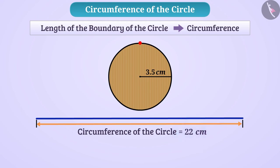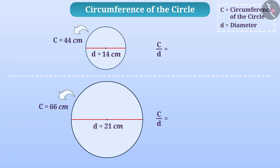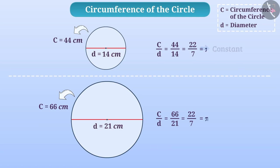There is an interesting relationship between the diameter and the circumference of the circle. If we find the ratio of the circumference of any circle to its diameter, then in each case it is 22/7. This ratio is constant, which is represented by pi.